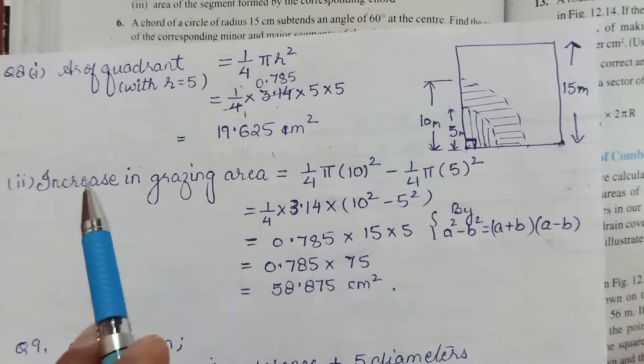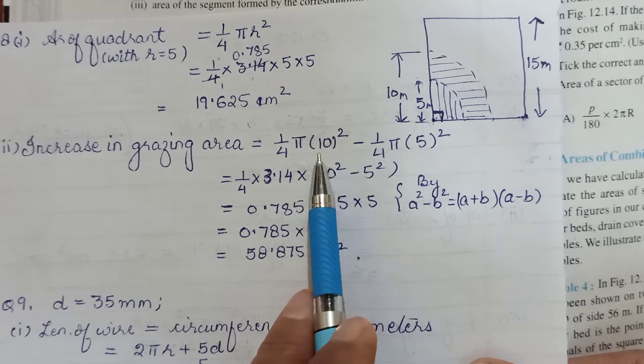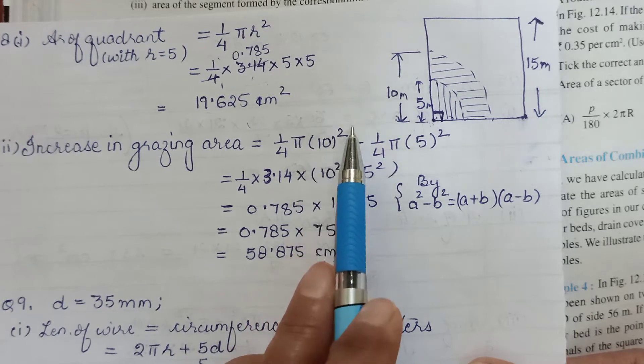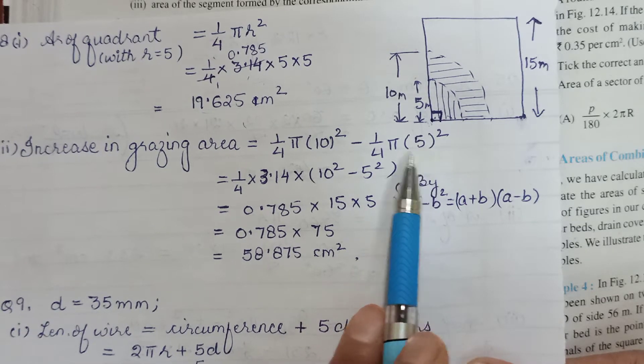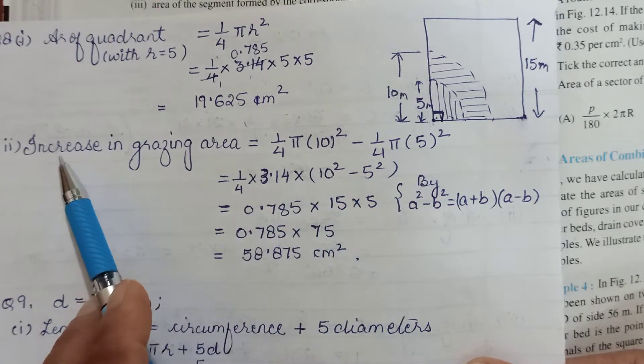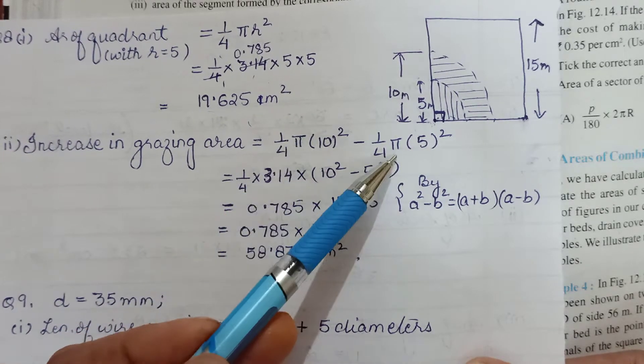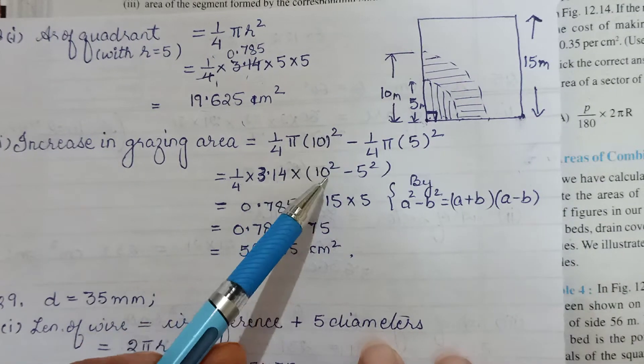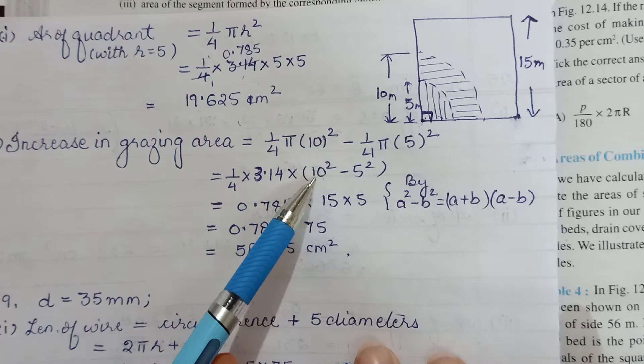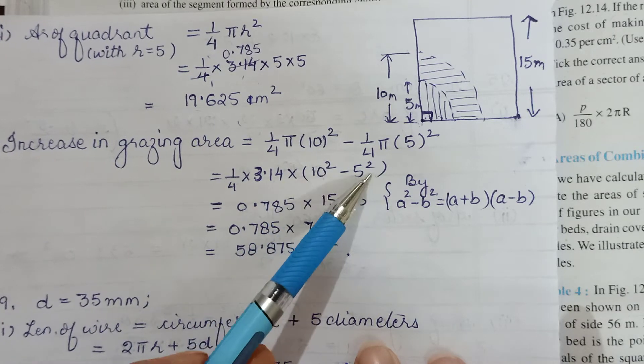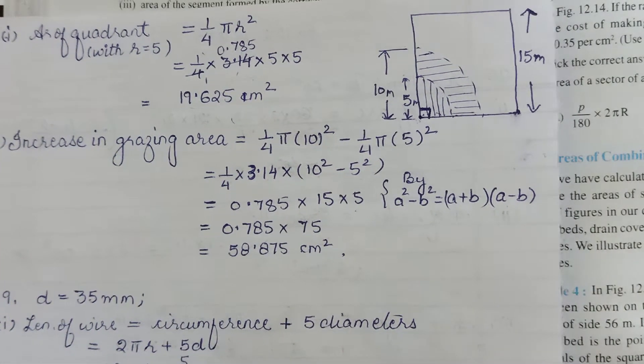Increase in the grazing area would be, since both are quadrants, 1/4 π times (new quadrant radius 10² minus previous quadrant radius 5²). I've taken 1/4 π common from both, so you're left with 10² and 5². I've applied a²-b² = (a+b)(a-b), so (10+5)(10-5) = 15×5. Do your calculation and that's the required increase in area.